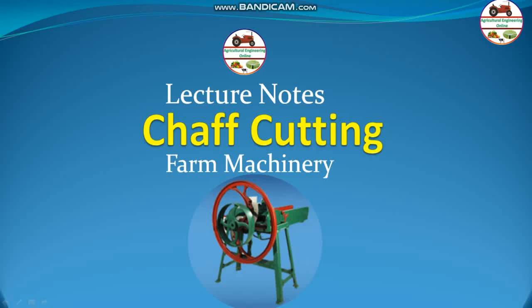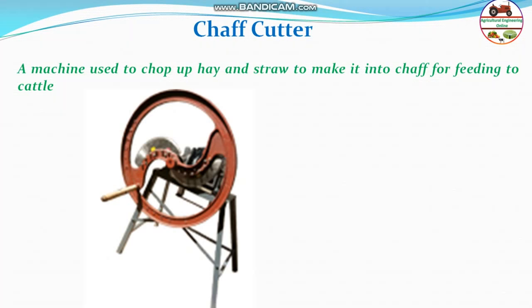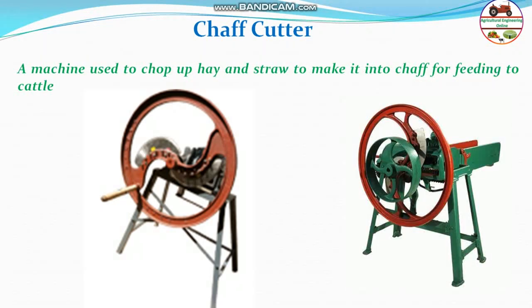Hello students, welcome to my channel Agricultural Engineering Online. This video is a continuation of the video lecture series on farm machinery, and this video is on chop cutters. A chop cutter is a machine used to chop hay and stir to make chaff for feeding to cattle. It is a mechanical machine — cutting chaff into small pieces aids animal digestion and prevents animals from rejecting parts of their food.